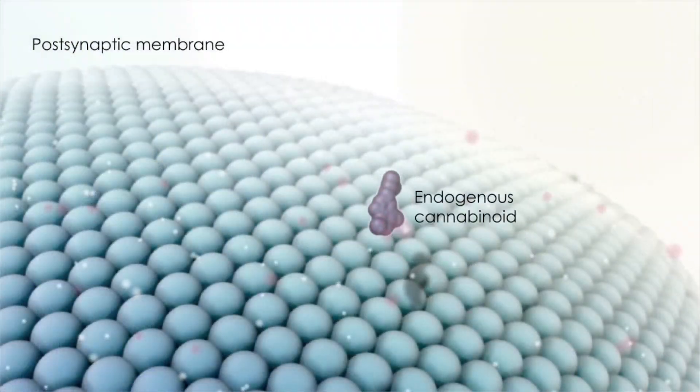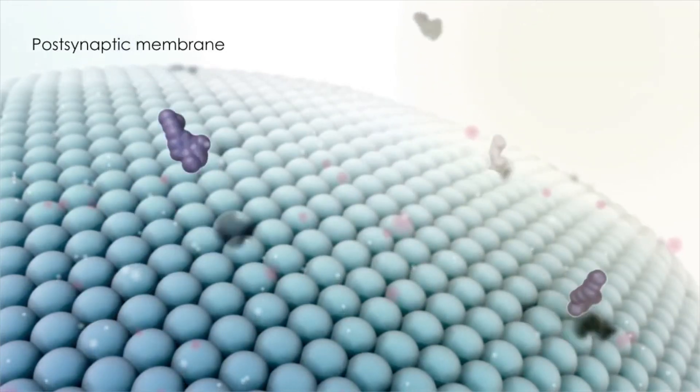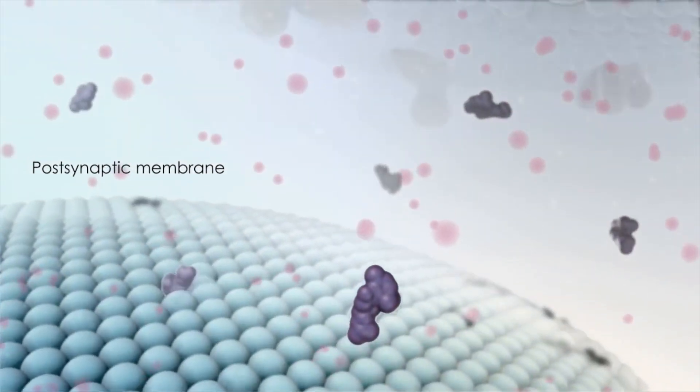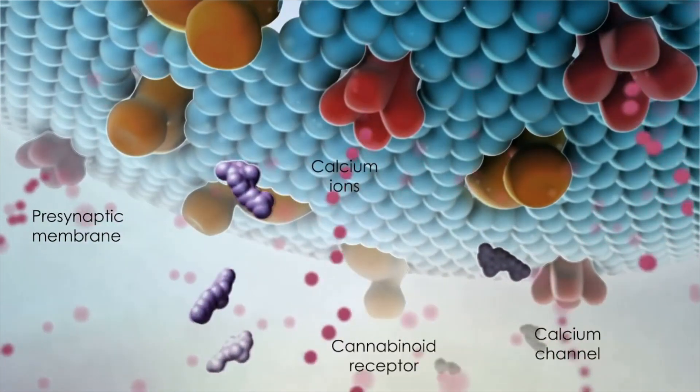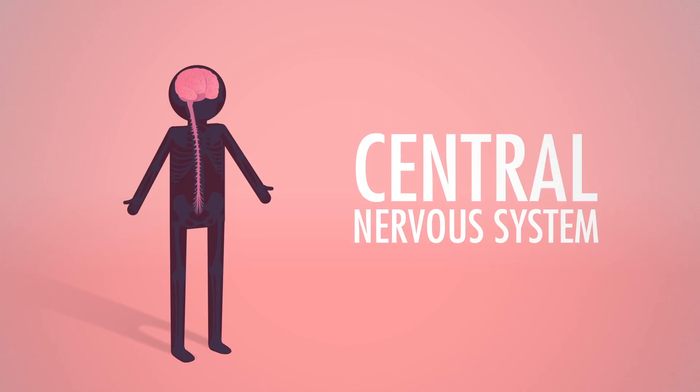Endocannabinoids are internal cannabinoids that are naturally produced within our body. CBD mimics our naturally occurring endocannabinoids and is proven to work with our internal system. Endocannabinoid and cannabinoid receptors are found in the body's immune system, central nervous system, the brain, organs, connective tissues, and glands.